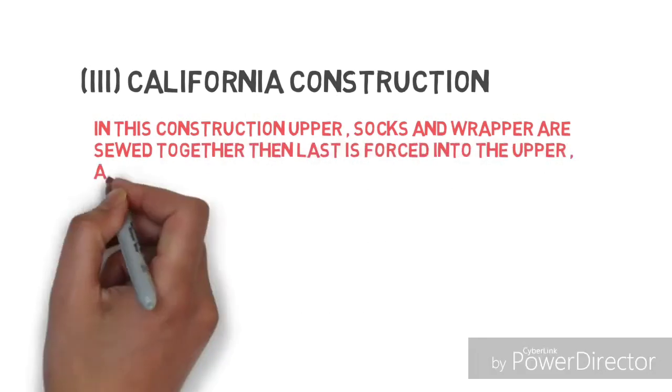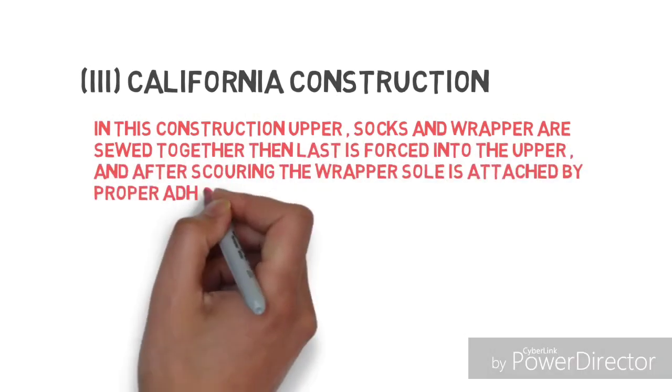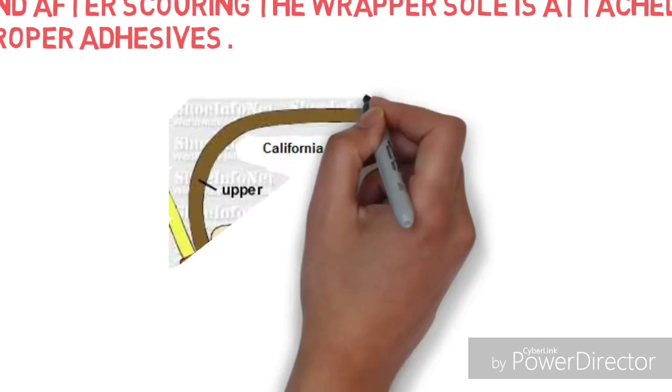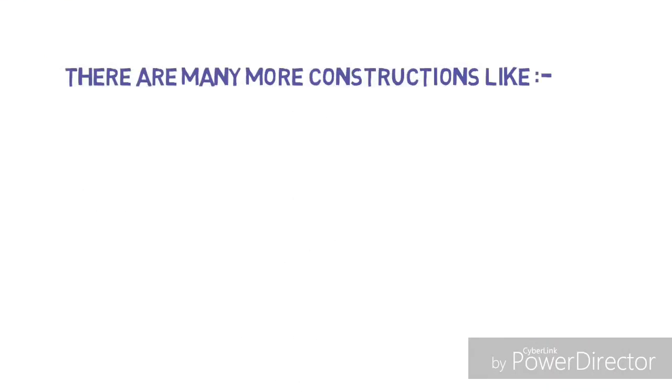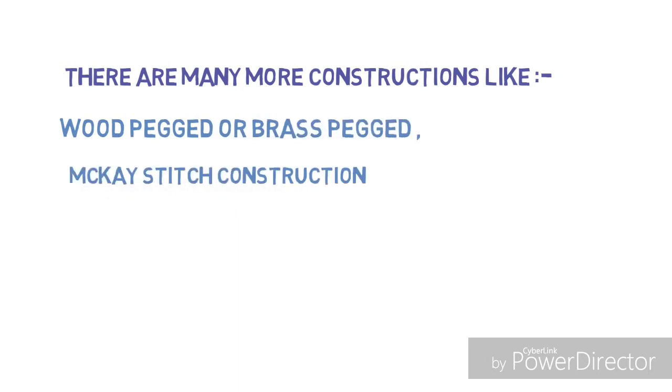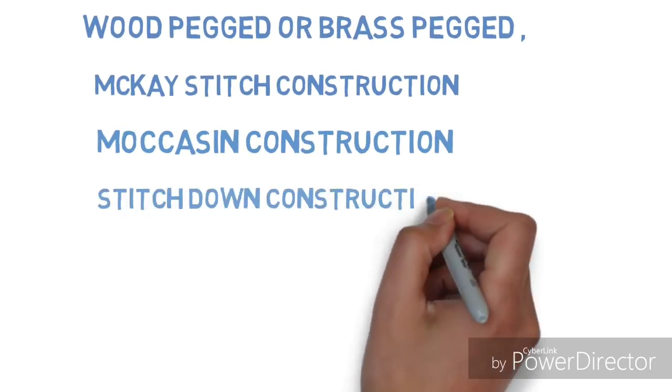Then the last is forced into the upper and after the scoring of wrapper, the sole is attached by proper adhesives. There are many more constructions like wood pegged or brass pegged, McKay stitch construction, moccasin construction, stitch down construction, and so on.